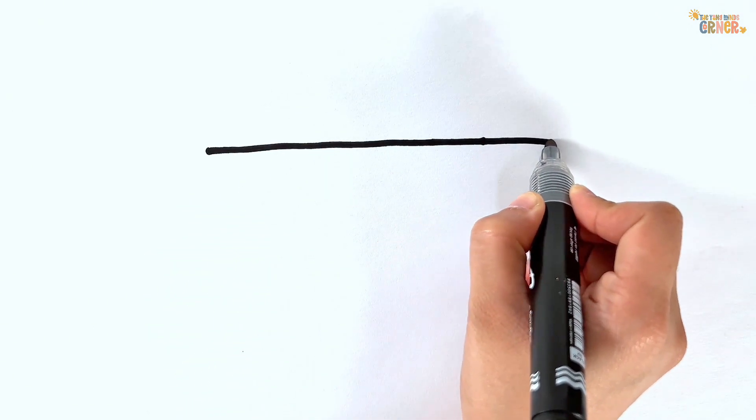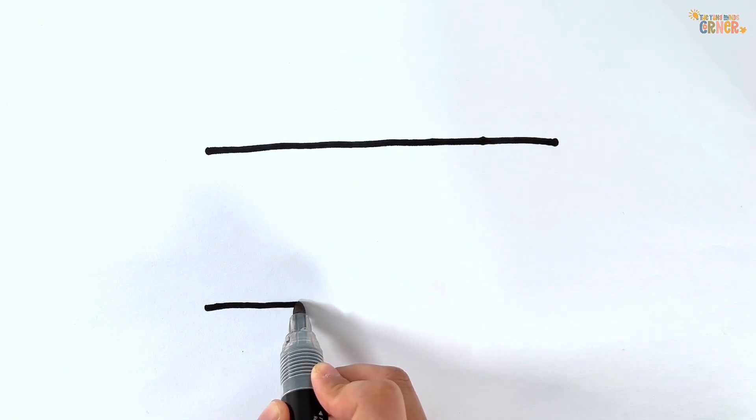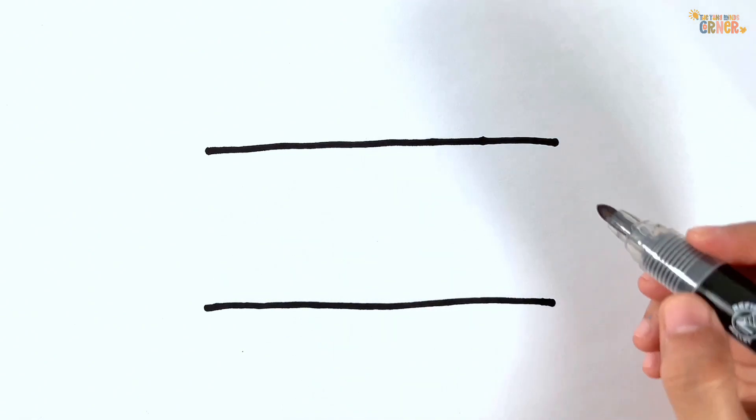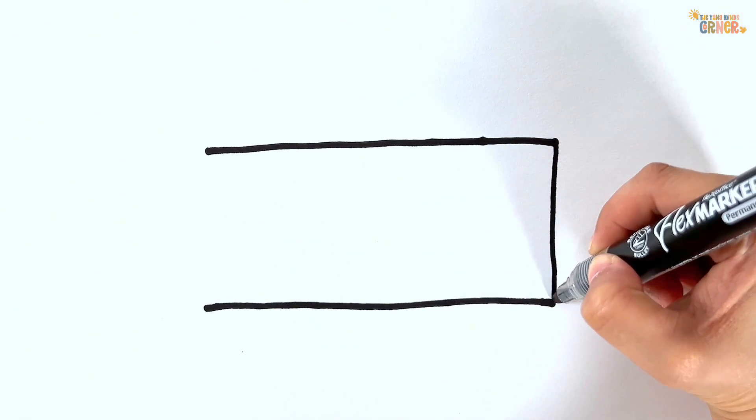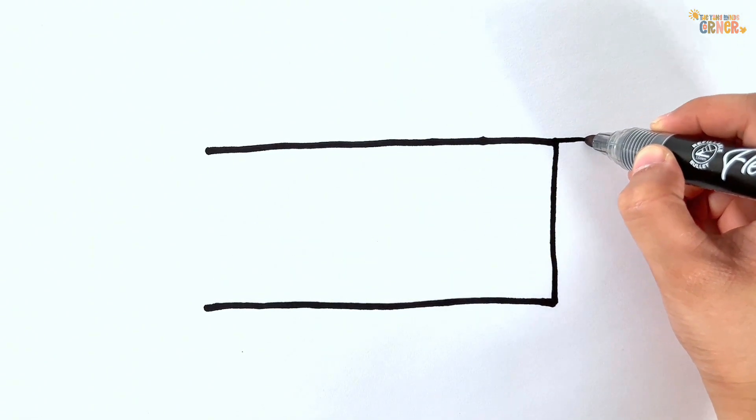First, draw two horizontal lines parallel to each other. Then draw a vertical line connecting the two horizontal lines. Make a semi-circle.